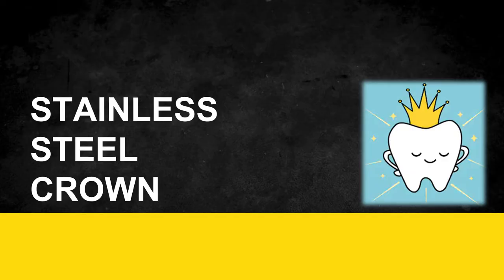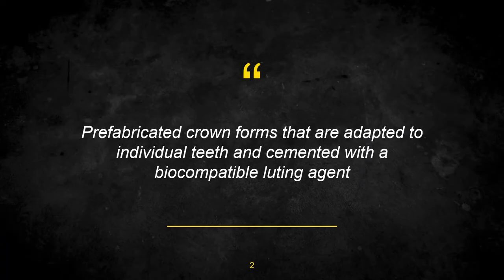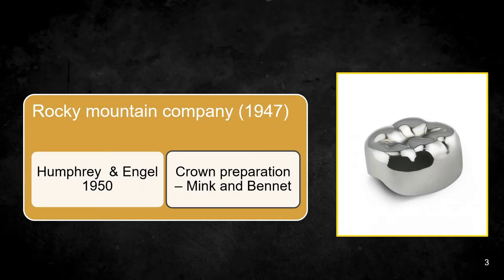So what are stainless steel crowns? These are prefabricated crown forms that are adapted to individual teeth and cemented with a biocompatible luting agent. They were first introduced by Rocky Mountain in 1947, but were brought to people by Humphrey and Engel in 1950. Later, the preparation for the tooth before placement of the crown was given by Mink and Bennett.